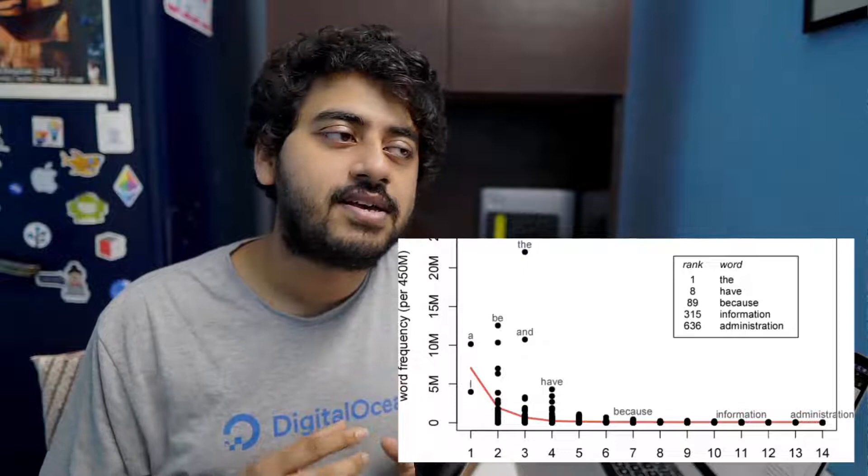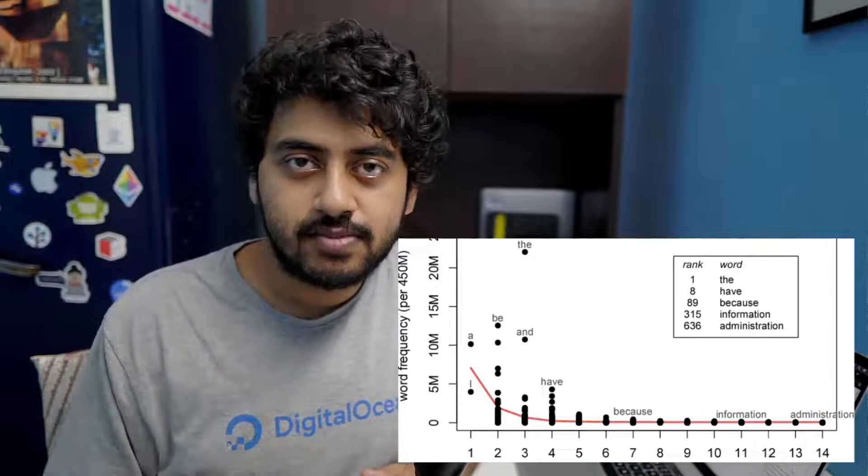There is also another law by the same person — Zipf's brevity law, also called the abbreviation law — which is related but not exactly the same. It says that the smaller the word, the more frequently it will be used. Words like 'the' and 'of' are used much more than longer words. Studies on online text show that over time, words like 'beautiful' become less used while words like 'cute' and 'nice' are used more.